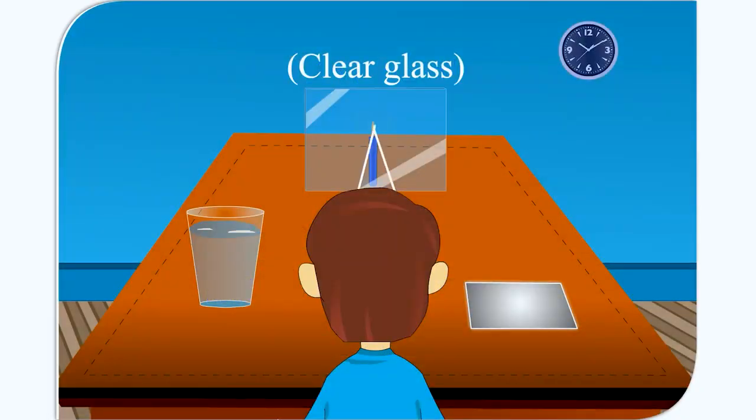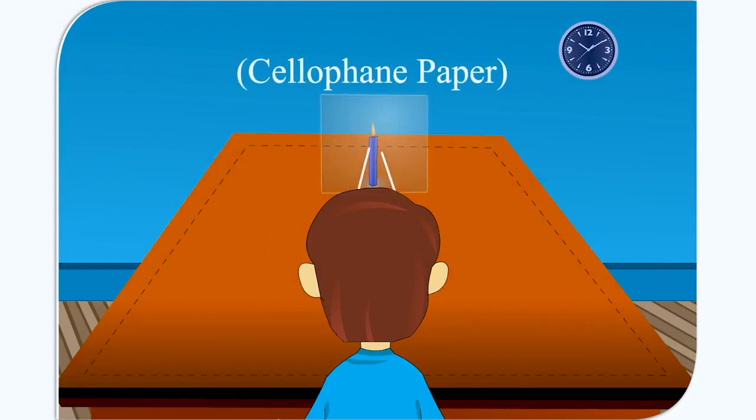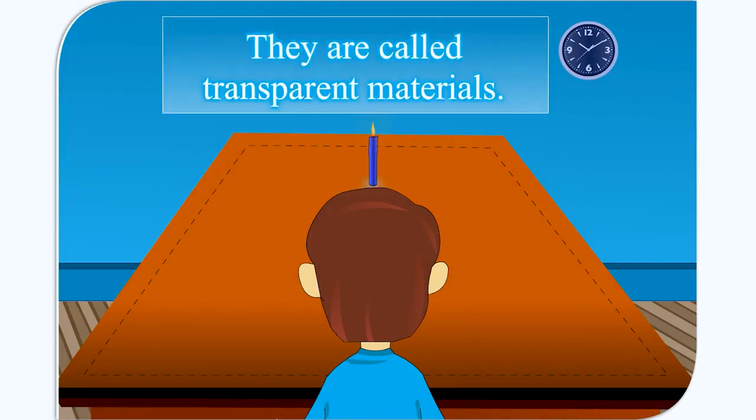Objects like clear glass, clean water, cellophane paper allow light to pass through them. We can see things clearly through them. They are called transparent materials.